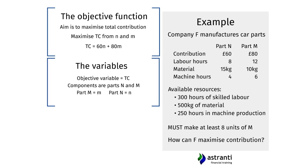Going back to the approach of suggesting quantities of Part N and Part M to manufacture — we can plug those quantities into the objective function to see how much contribution they generate, then compare and decide which is best. However, we haven't considered the resources available. We need to make sure all suggestions are actually feasible: do we have enough material, labour hours, and machine production hours to make the output we want?